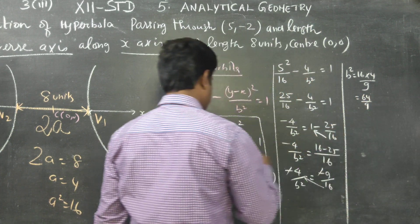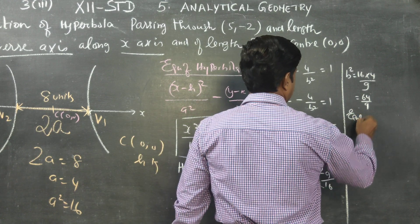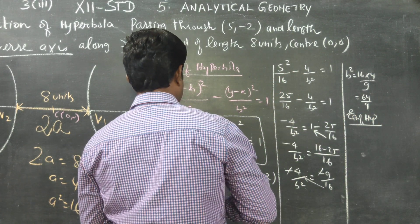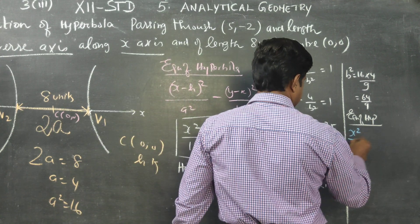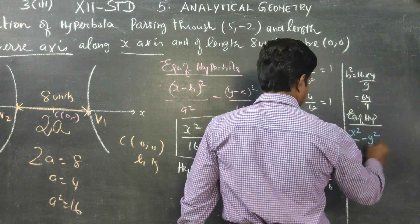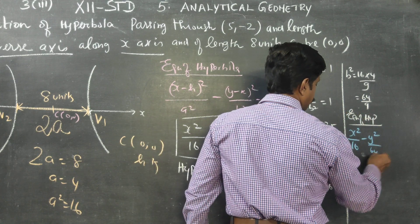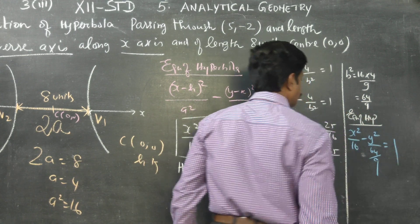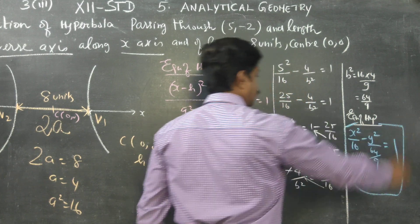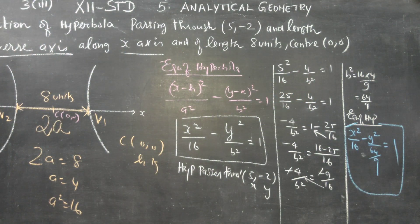Finally, substituting the values, the equation of the hyperbola is x²/16 minus y²/(64/9) equals 1. This is the final answer for the equation of the hyperbola. Thank you.